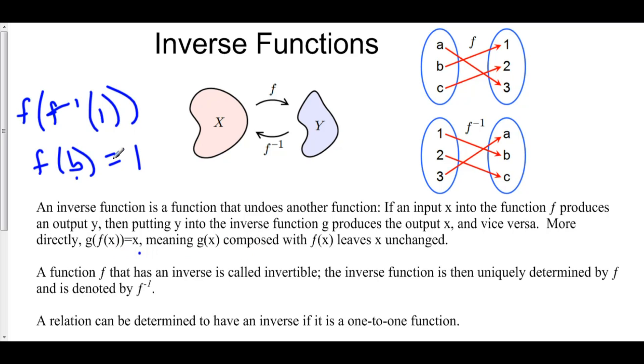So if you compose f and its inverse, it just leaves your x value unchanged because one would go to B, and then B would go back to one. Now, a function f that has an inverse is called invertible. The inverse function is then uniquely determined by f and is denoted by f inverse. A relation can be determined to have an inverse if it is a one-to-one function.